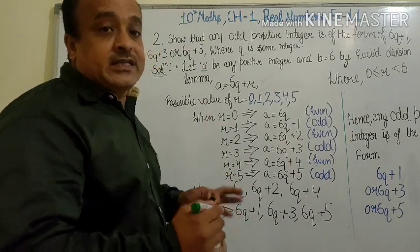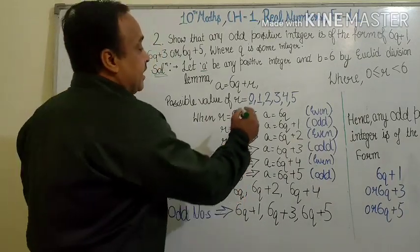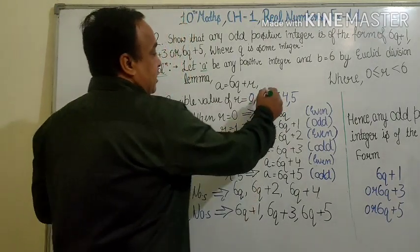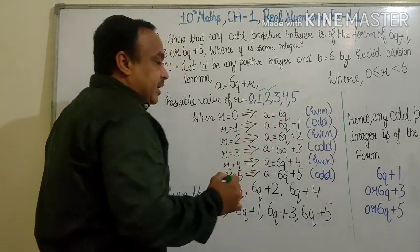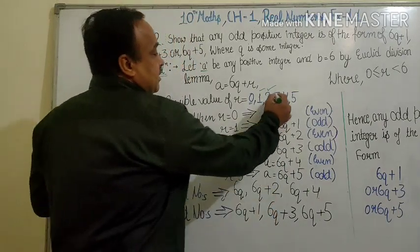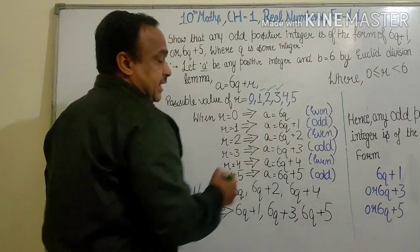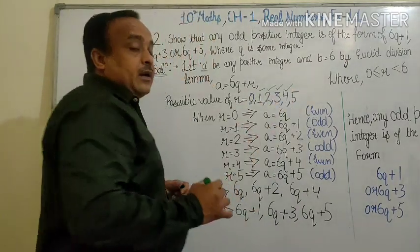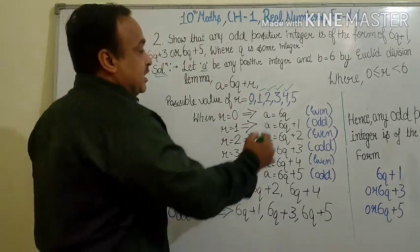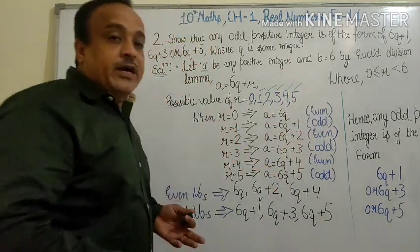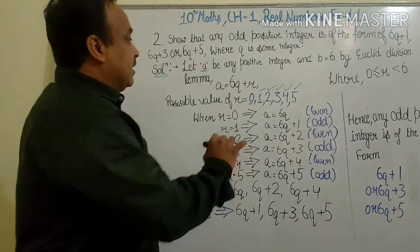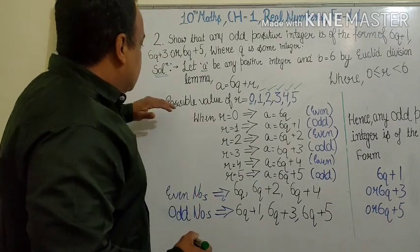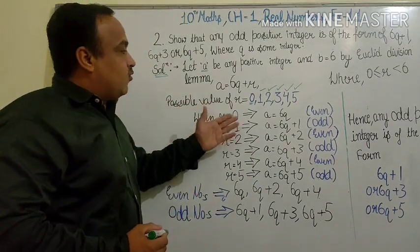If we divide 7 by 6, the remainder is 1. Similarly, if we divide 8 by 6, the remainder is 2. In the same way, if we divide 9 by 6, the remainder is 3. If we divide 10 by 6, the remainder is 4. If we divide 11 by 6, the remainder is 5.